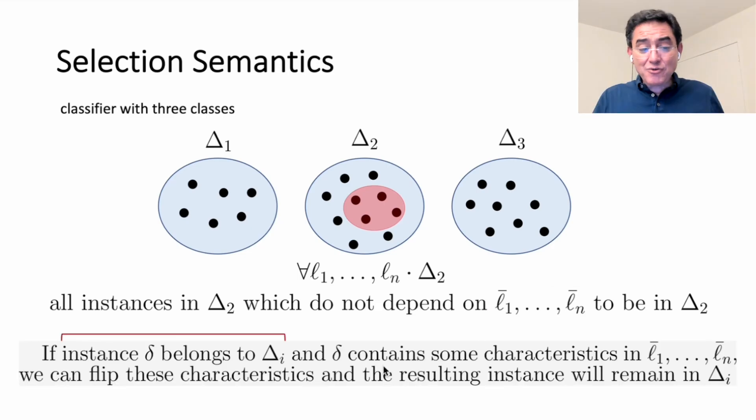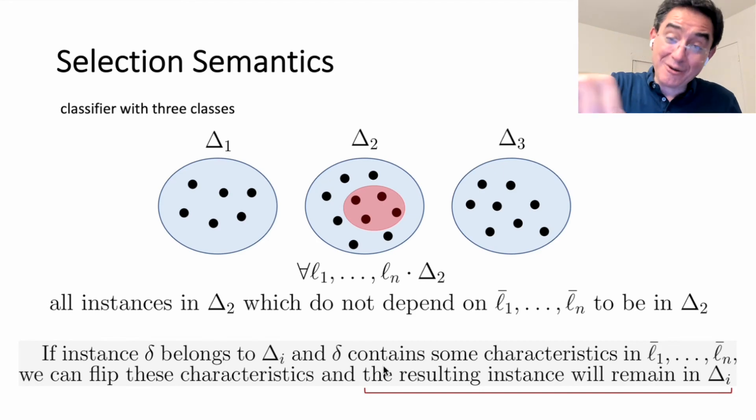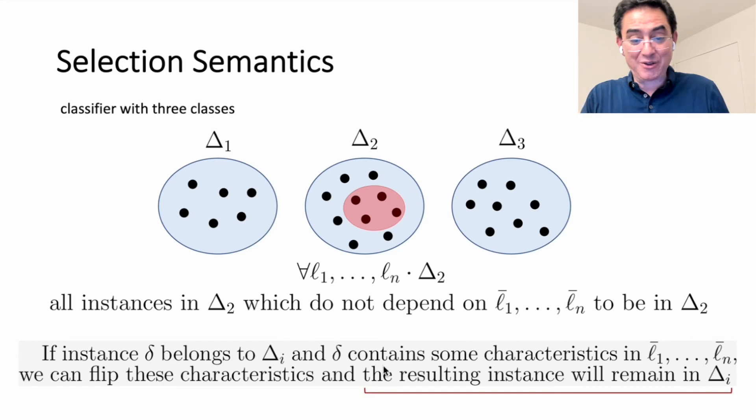It is those that do not depend on these literals for their membership in that class. Meaning, if you have a class, delta, and you have an instance that belongs to it, and that instance contains characteristics in the set, then what we can do is we can flip these characteristics as we wish, and the resulting instance will remain in that class. That's what it means not to depend on these particular characteristics. Those are the ones that are being selected by universal literal quantification, and that stands behind quite a bit of the results that we derived in this line of work.